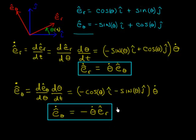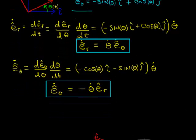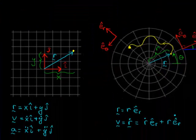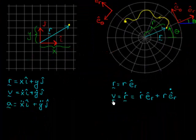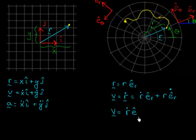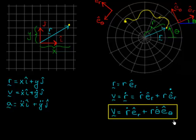Now I'll use those two results for the time derivatives of the basis vectors. Recall that velocity was r-dot times e-hat-r plus r times e-hat-r-dot. Rewriting: the first term is r-dot e-hat-r, and then r times e-hat-r-dot — which we know is theta-dot e-hat-theta — gives r times theta-dot e-hat-theta. There's the expression for velocity.